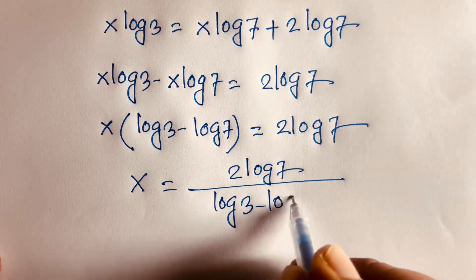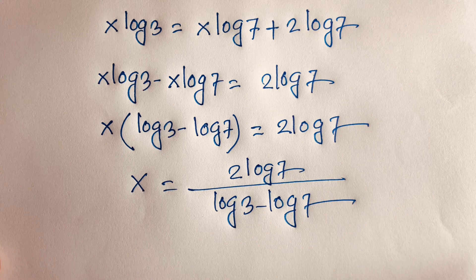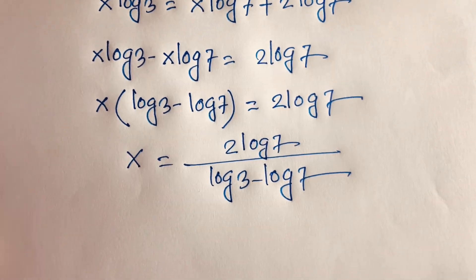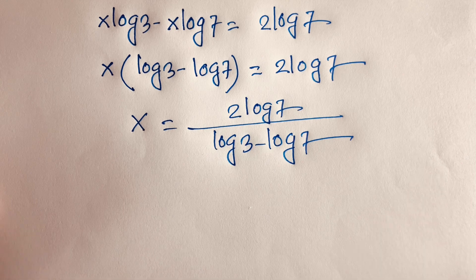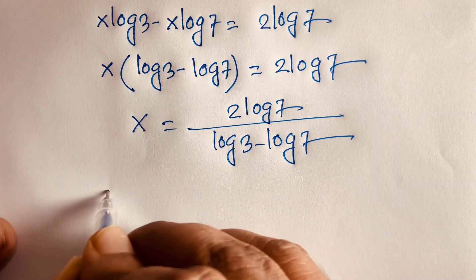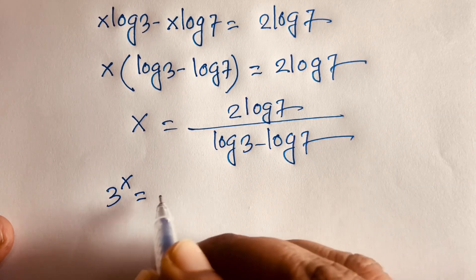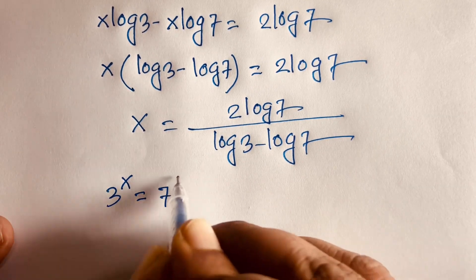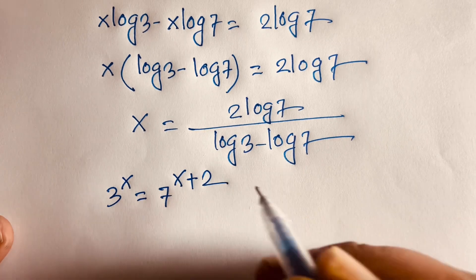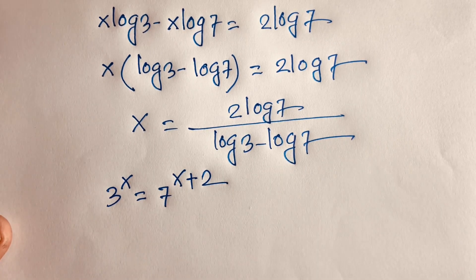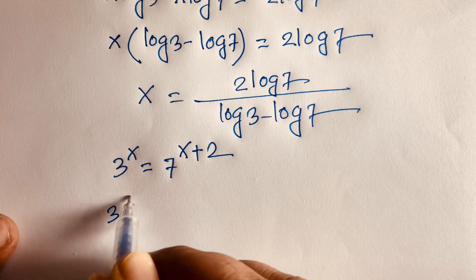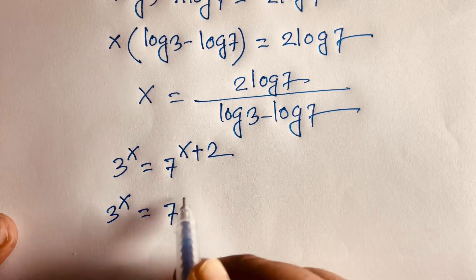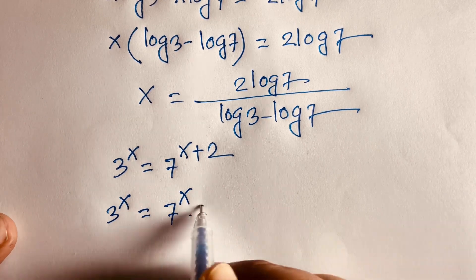This is our final answer. Now I'll solve this question using another method. Our question is 3 power x is equal to 7 power x plus 2. I can see it will be 3 power x is equal to 7 power x times 7 power 2.